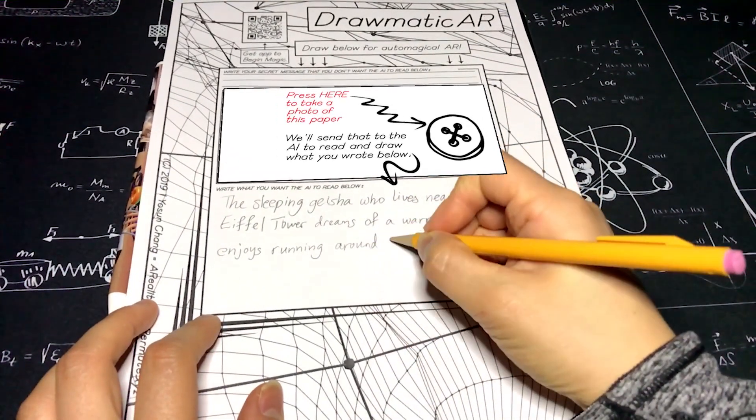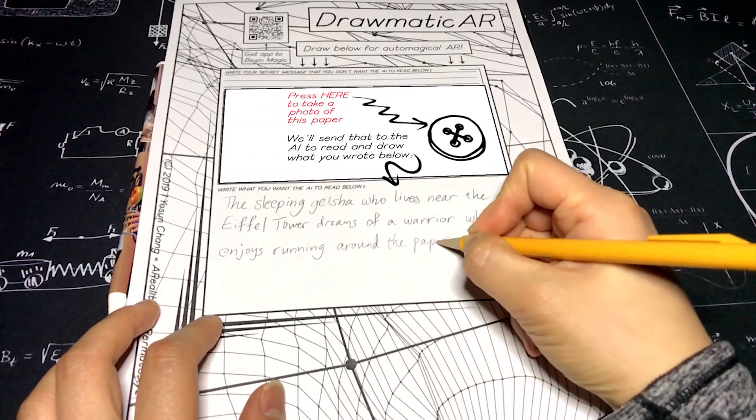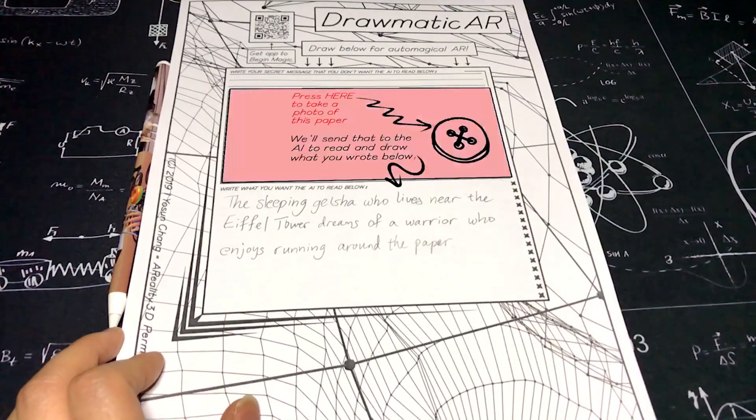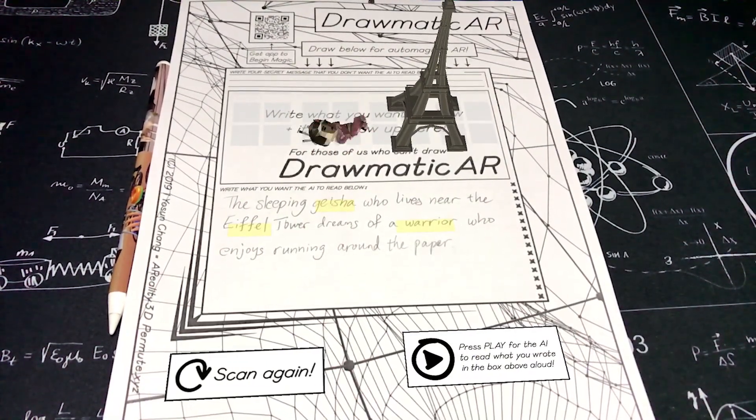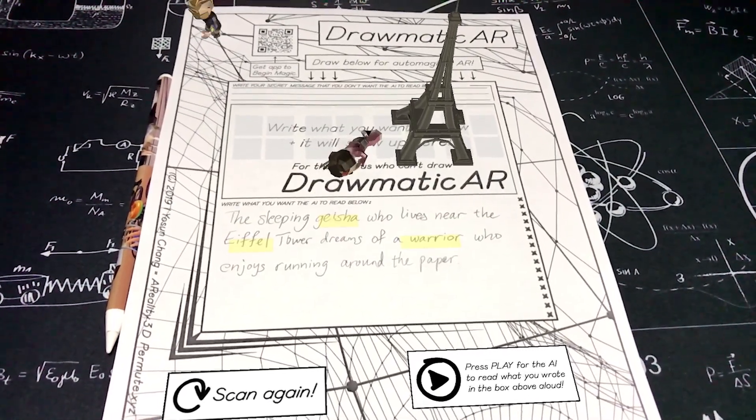Dramatic AR is an iOS and Android app that lets you turn what you write on paper into an interactive animated 3D AR story. Automatically drawn by AI and narrated by a classy British voice.